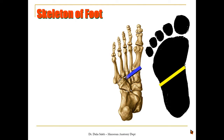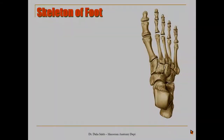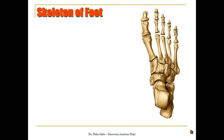Let's first know the different regions of the foot. If we take a line that passes at the tarsometatarsal joints and another line that lies at the transverse tarsal joint, the foot will be divided into three regions: the hindfoot, the midfoot, and the forefoot. If we look at the dorsal surface of the skeleton of the foot, it is made of three sets of bones: the tarsals, the metatarsals, and the phalanges.